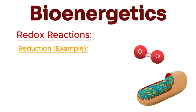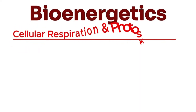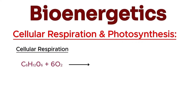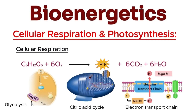Cellular respiration is the process by which cells convert glucose and oxygen into energy, ATP, carbon dioxide, and water. It involves glycolysis, the citric acid cycle, and the electron transport chain.